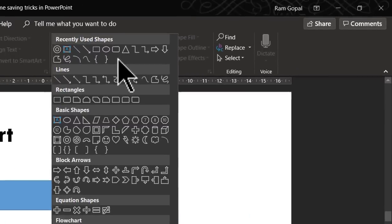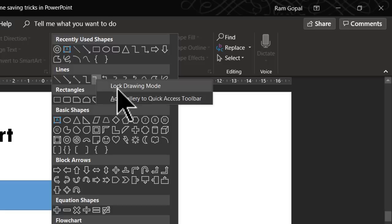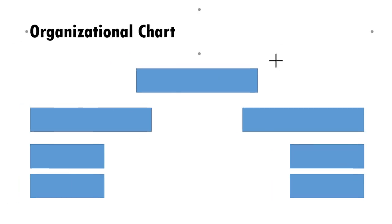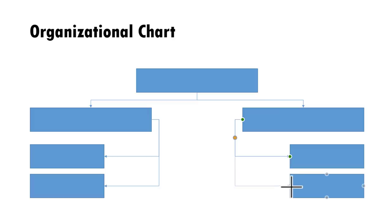Go to the auto shapes gallery, find the tool you want, and once you are happy with the tool, right-click and go to Lock Drawing Mode. Your cursor changes to that particular tool, which means you can use it to connect boxes repeatedly without going back to the gallery. I can use this to connect one pair, then another, then another — using the same tool over and over. This saves a lot of time especially when creating a flow chart or organizational chart.